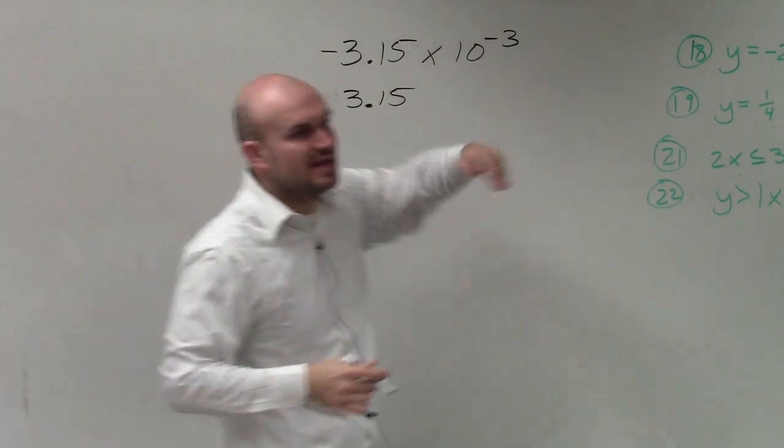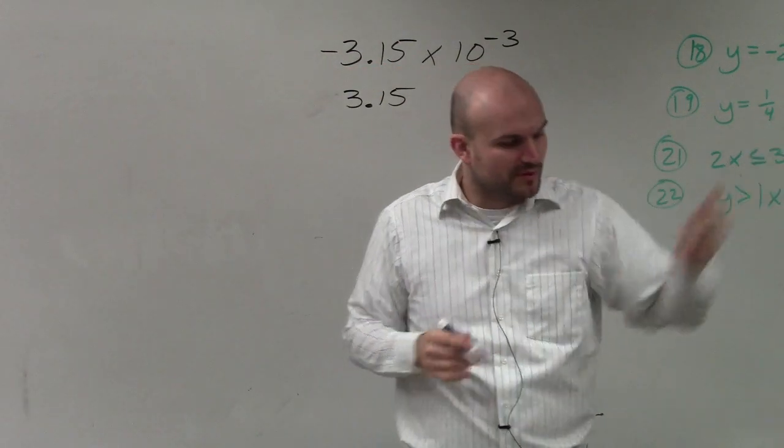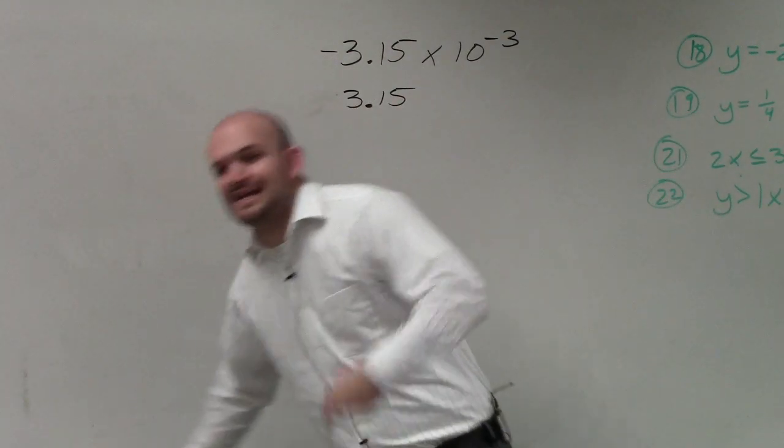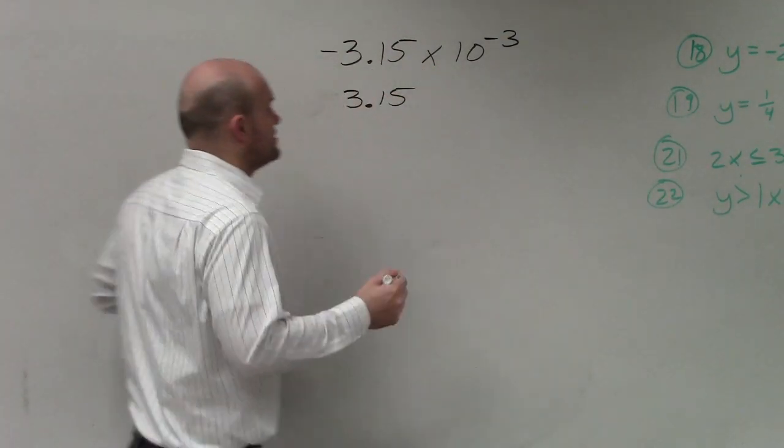And now, instead of—if it was positive, you move the decimal point to the right. Now we're simply going to be moving it to the left, representing dividing by 10 to the third power.